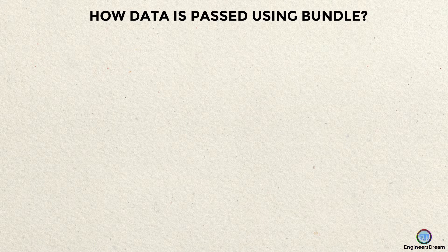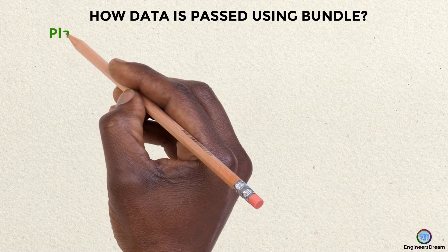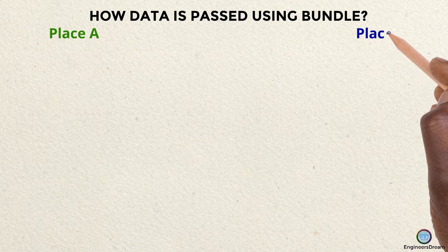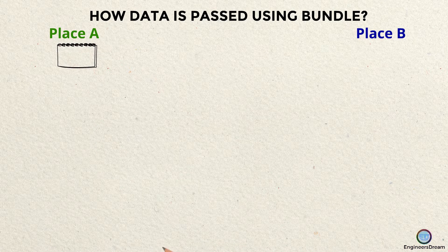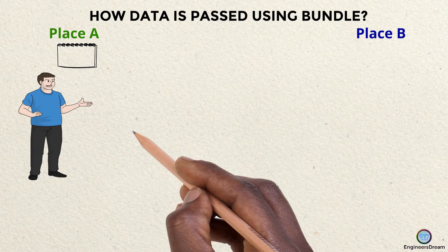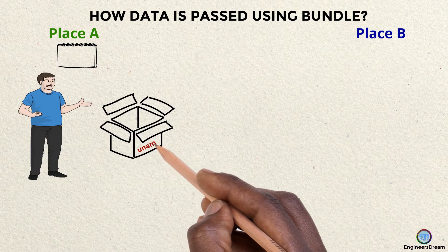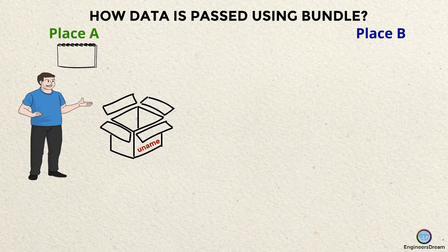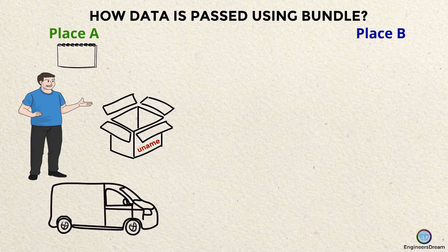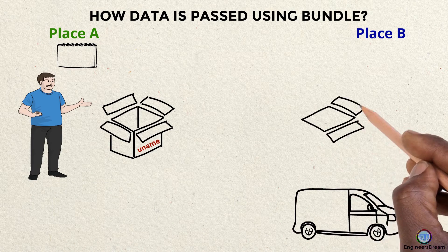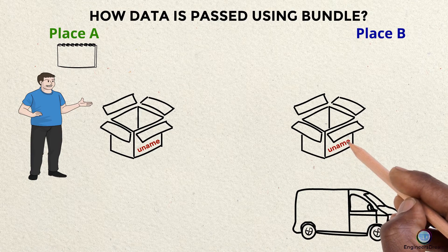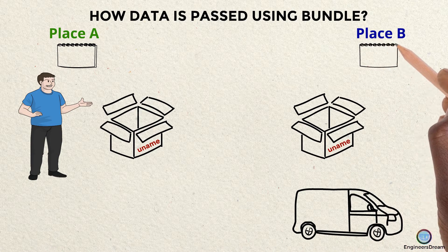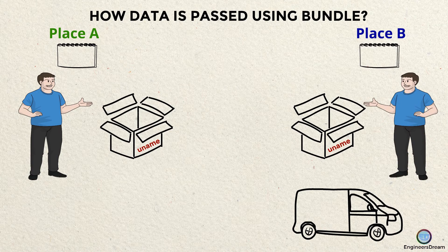Before we start writing the code, let me explain how data is passed using a bundle. If you want to send a parcel from place A to place B, the first thing you need is the parcel. The courier company will put your parcel inside a box, and outside the box the destination address will be there. Next, the box will be put in a van, and the van will go to place B. Someone from the courier company will remove the box from the van, have a look at the parcel, and deliver it to the proper address.